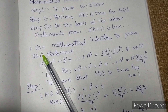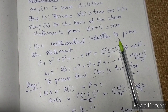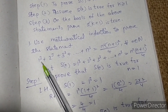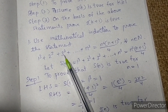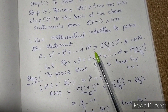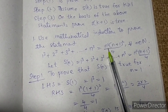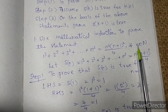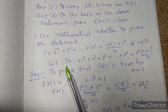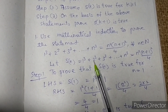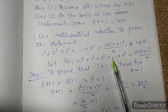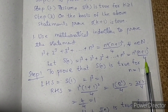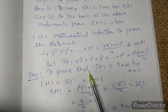Use mathematical induction to prove the statement. The statement is given as: 1³ + 2³ + 3³ + ... + n³ equals n² × (n+1)² divided by 4, for all n belonging to the natural numbers ℕ. Now let S(n) equal 1³ + 2³ + 3³ + ... + n³, which equals n² × (n+1)² divided by 4.